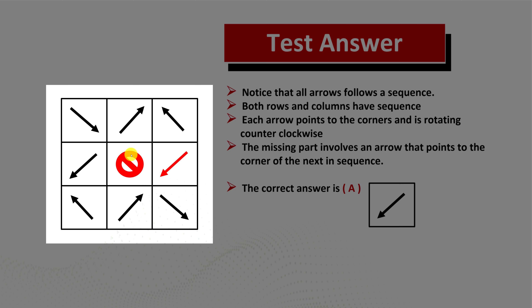The missing piece in the middle is designed to confuse you. It does not have an actual arrow, and it was put there to show there is no sequence in the middle row. So the sequence for the missing part has to be re-established from the right column. We have an arrow in the upper right box pointing to the upper left corner, the next pointing to the bottom left corner, and the following to the bottom right corner — moving counterclockwise.